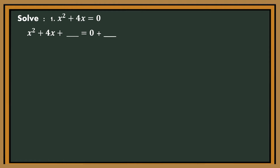Determine the value of b — so what is the value of b? 4. Then divide it by 2 — the quotient is 2. Then square it — the answer is 4. Let us write it on the blanks.